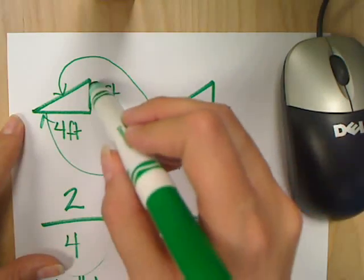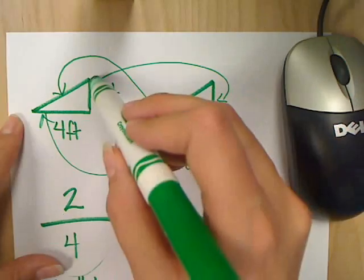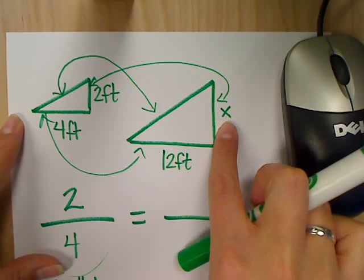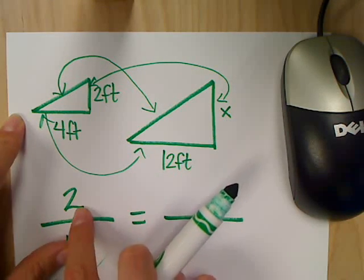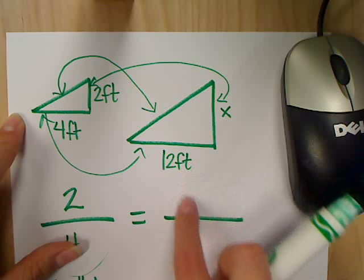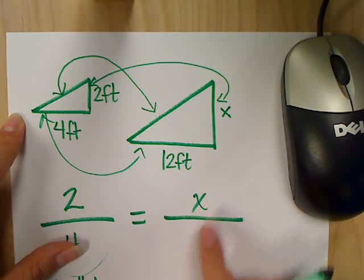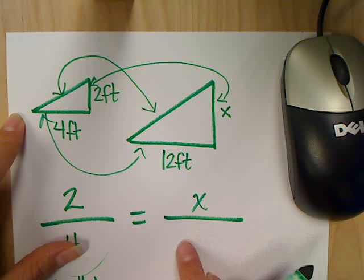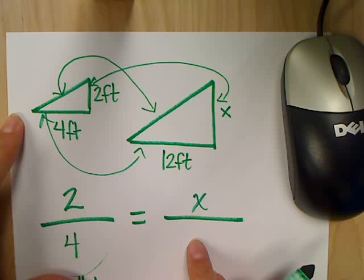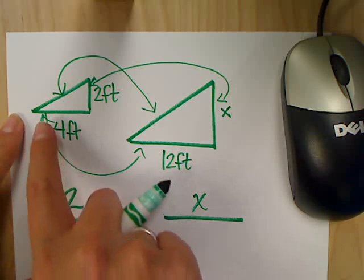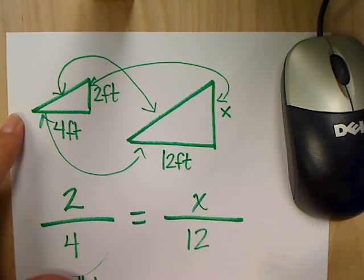And so obviously this 2 corresponds with this unknown of my x. Now, since the 2 corresponds with the x, the x needs to belong right up top here, my unknown. That leaves me this empty space, which is going to be what? 12, because the 4 corresponds with this 12-foot side.